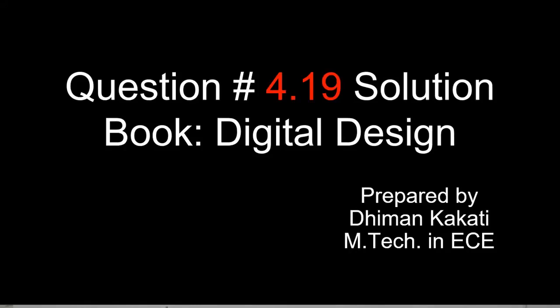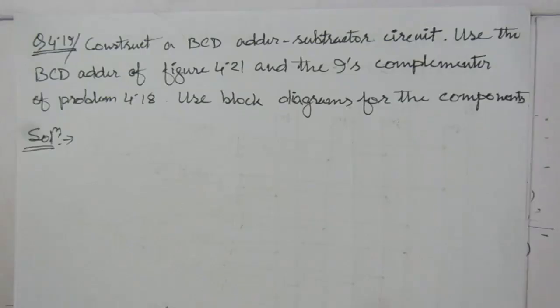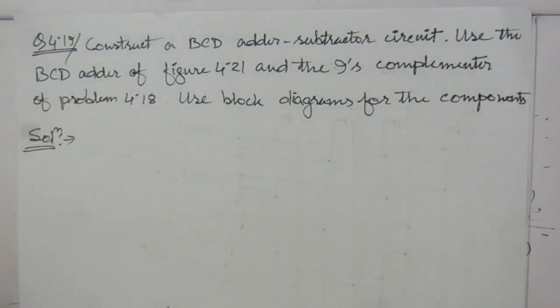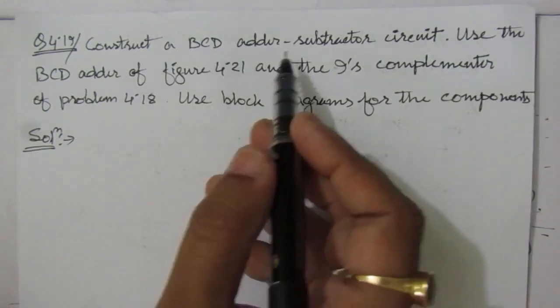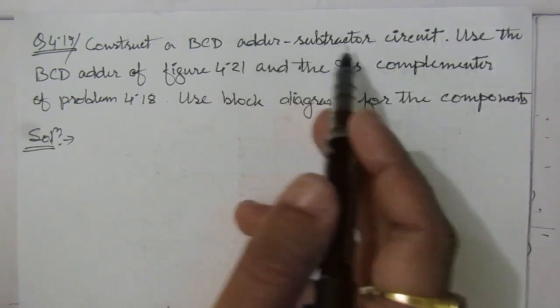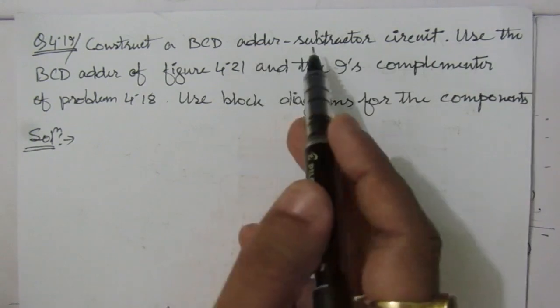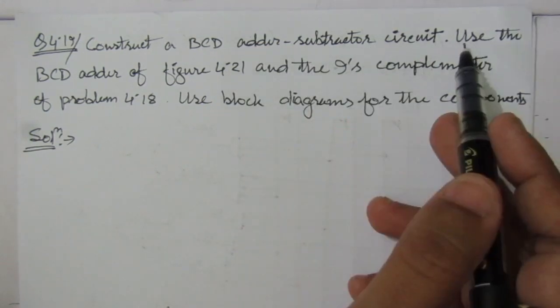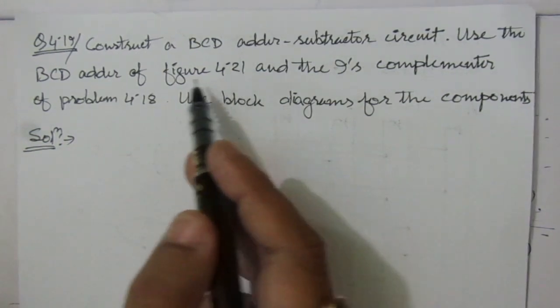Dear students, welcome to this problem solution series in digital electronics. I am solving problems from the book 'Digital Design' by Morris Mano and Michael C. Ciletti. In this video I am solving problem number 4.19 from chapter 4. The problem is to construct a BCD adder-subtractor circuit — a circuit that performs both addition and subtraction — using the BCD adder of figure 4.21.